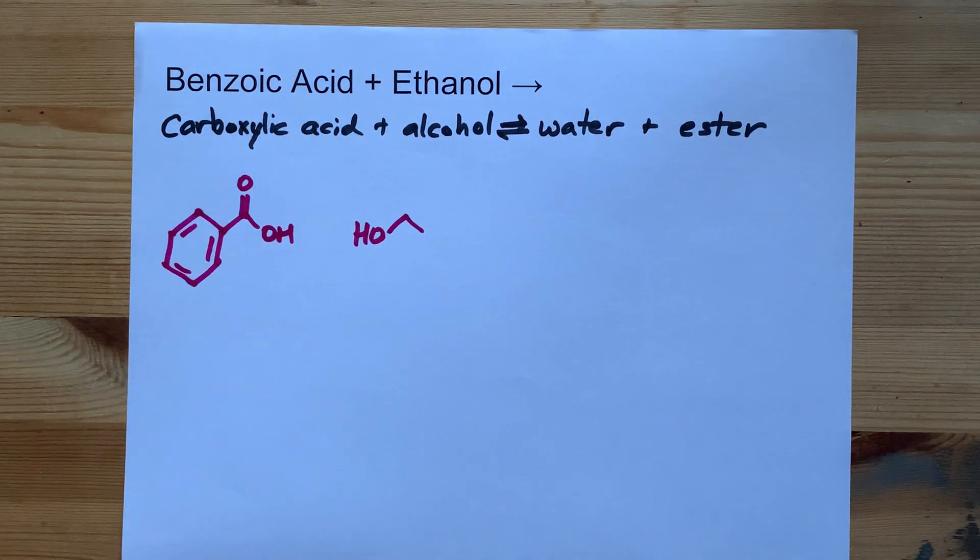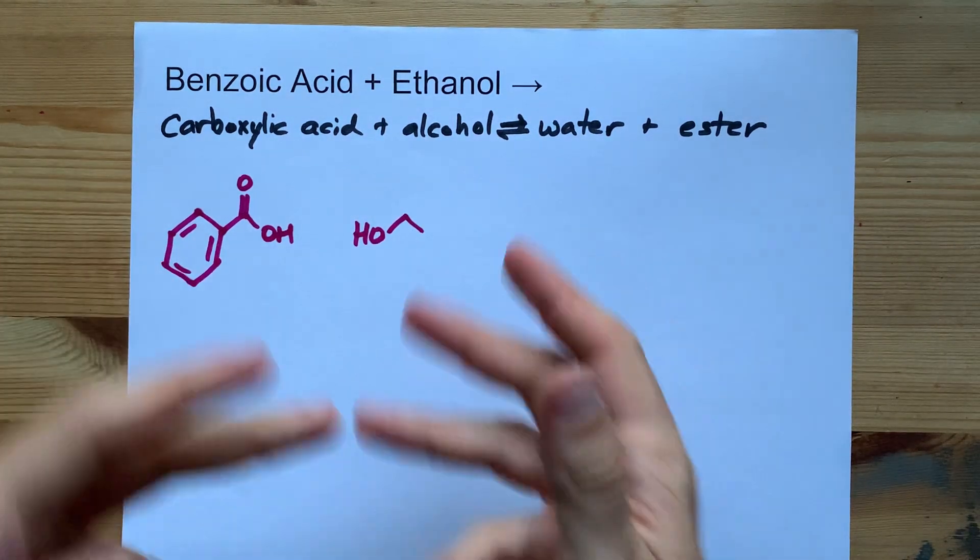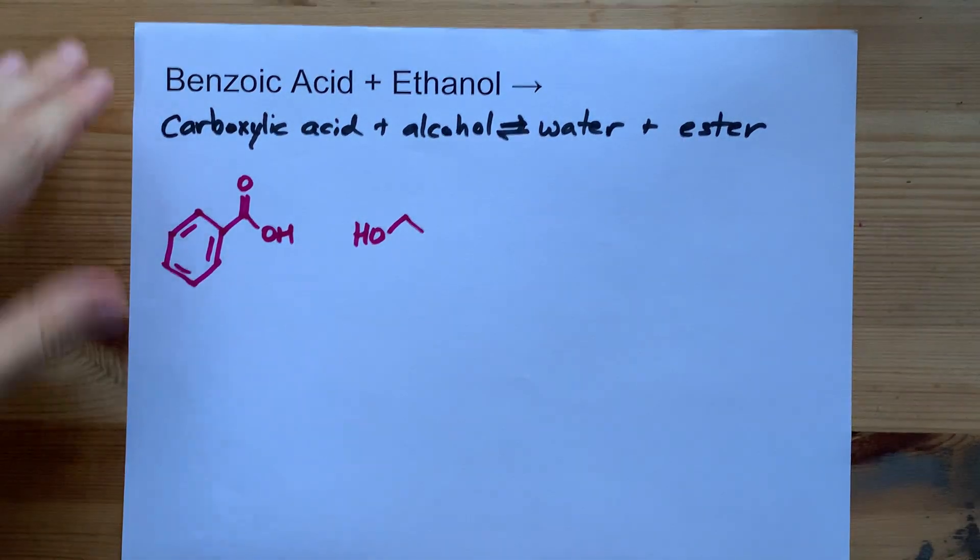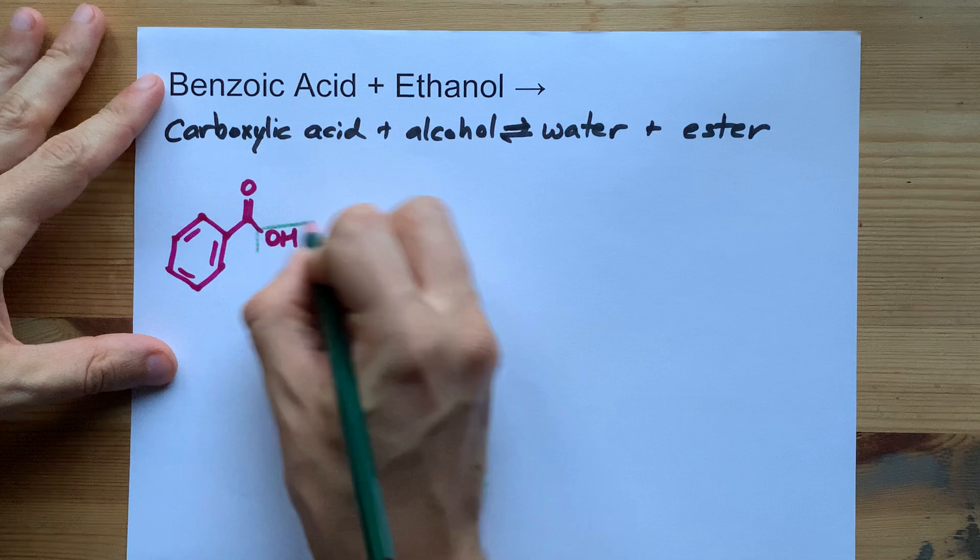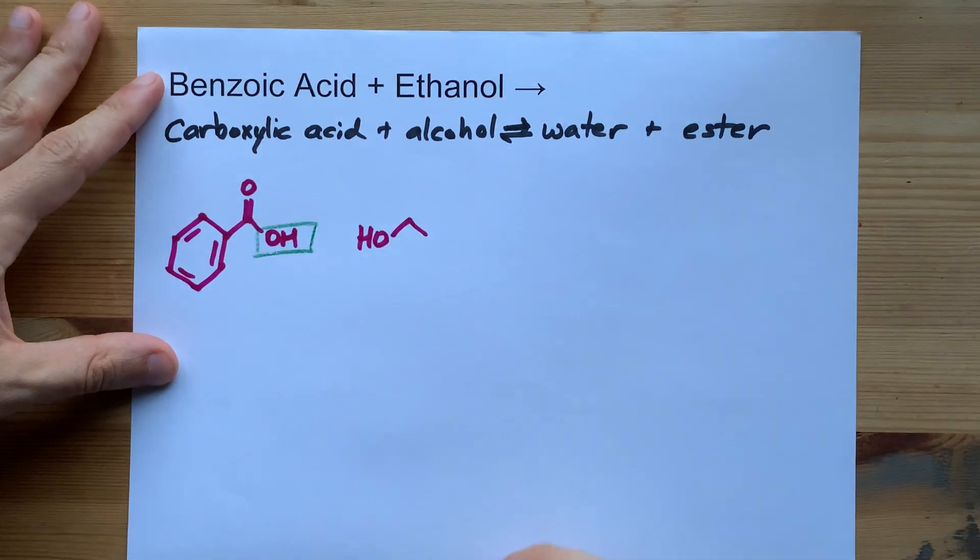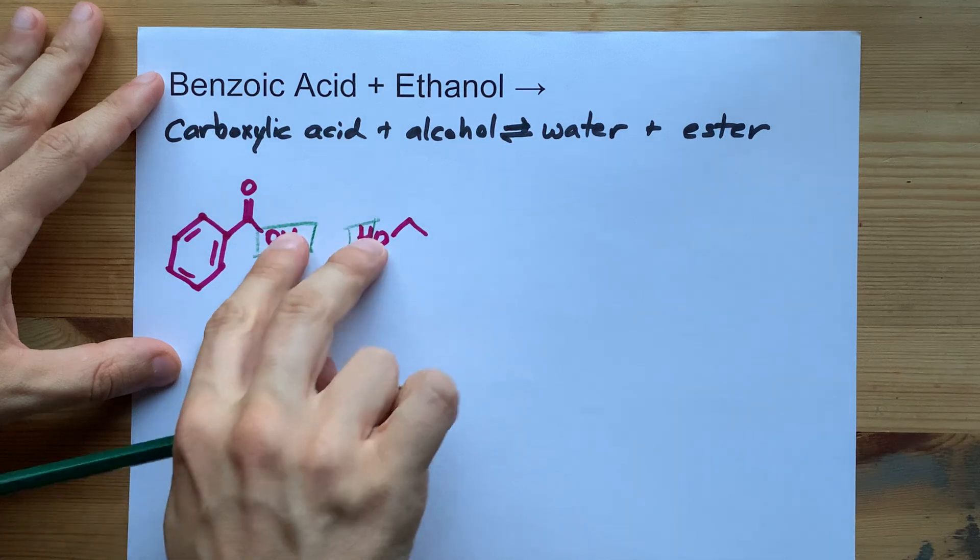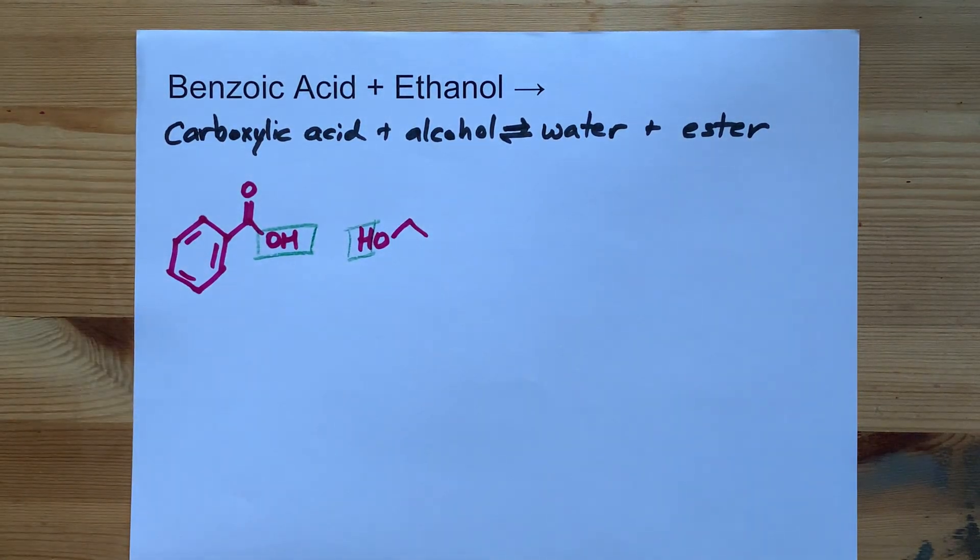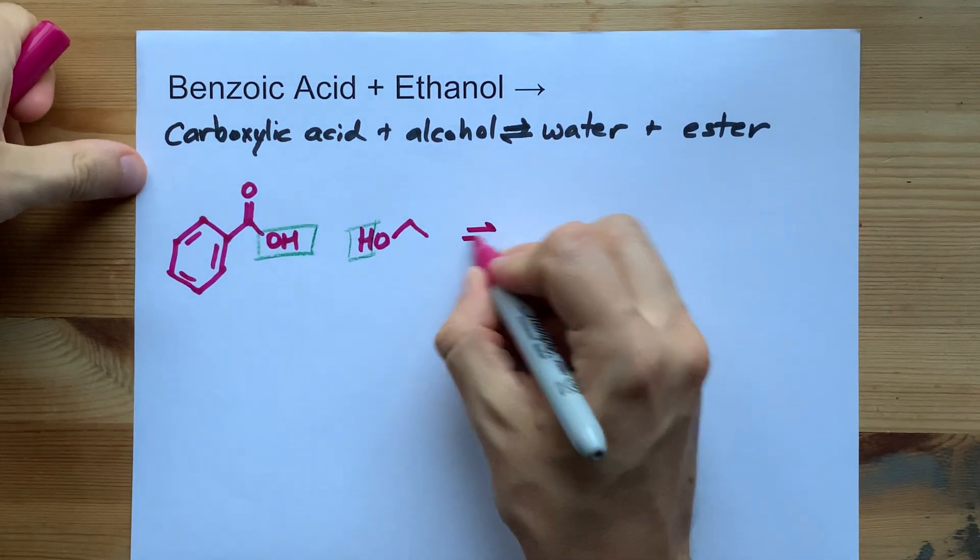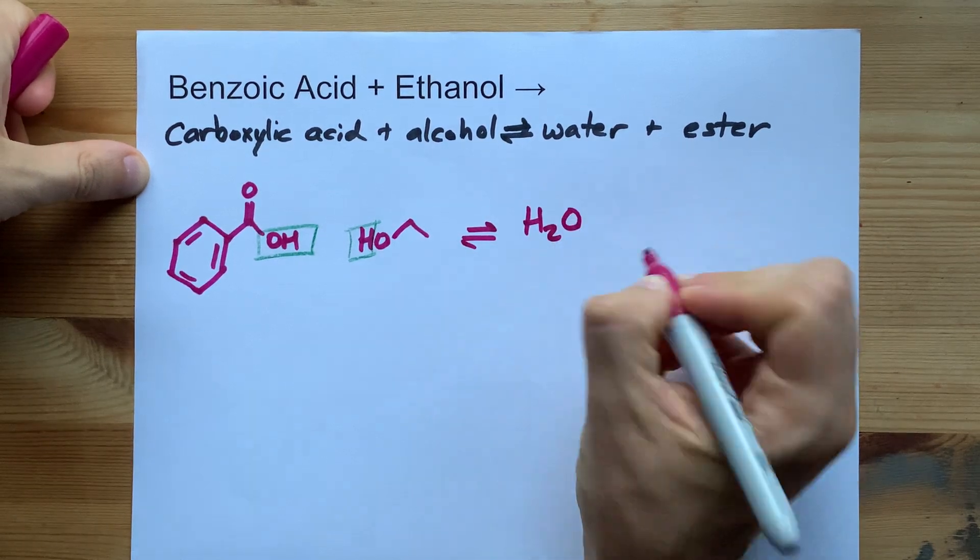When you combine these two, there's actually like a five or six step reaction that ends up happening. But the end result is that the OH from the acid and the H from the alcohol end up connected and falling off of the molecule entirely. That's what gives you the water in this reaction.